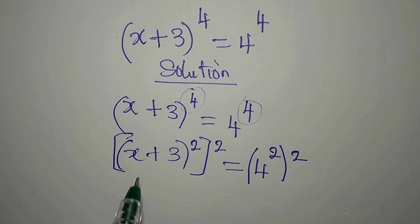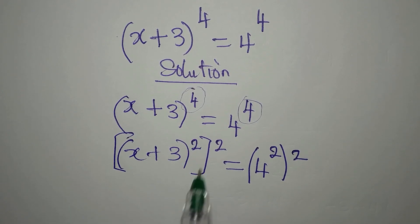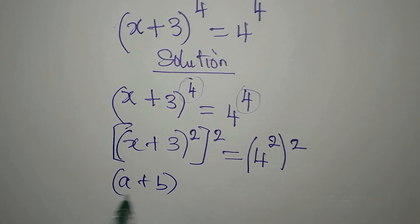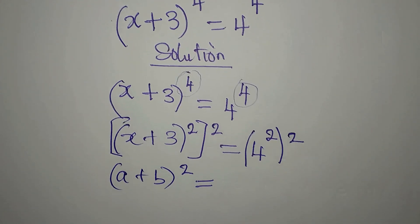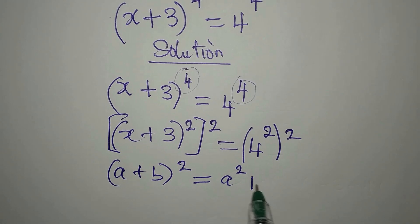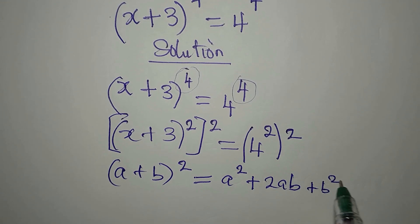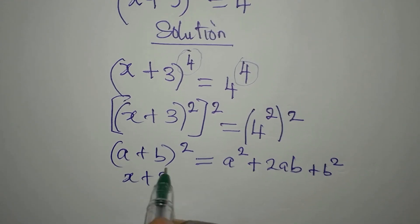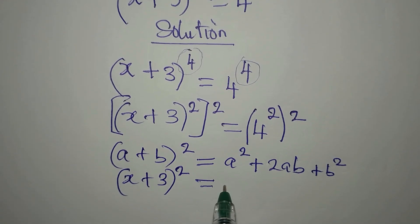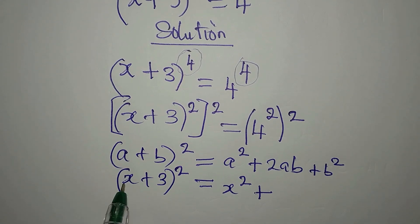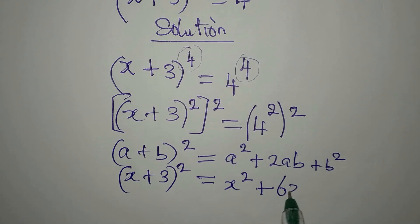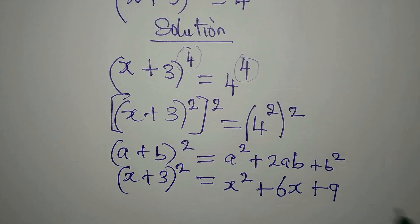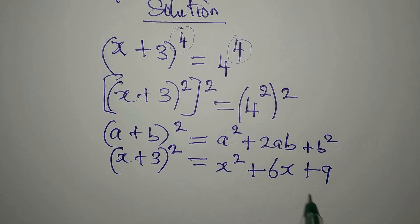Now, (x + 3) to the power of 2 — you can expand it. If you have (a + b) to the power of 2, the expansion gives a² + 2ab + b². In the same way, the expansion of (x + 3)² gives x² + 2(x)(3) = x² + 6x, then plus b² which is 3² = 9.